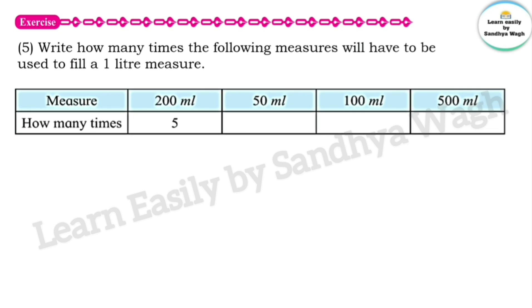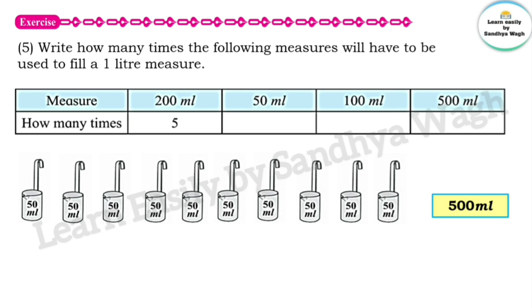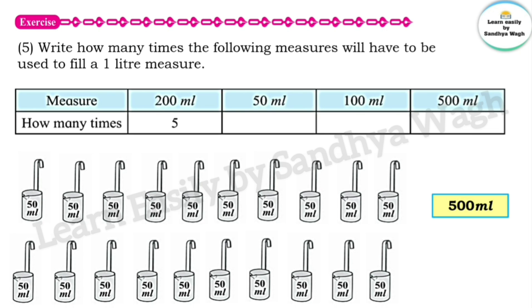Next, for the 50 ml measure: if we use 10 measures of 50 ml, we get 500 ml. And another 10 measures gives another 500 ml. So 500 ml plus 500 ml equals 1000 ml, which is 1 litre. Therefore, the 50 ml measure is needed 20 times to complete 1 litre.